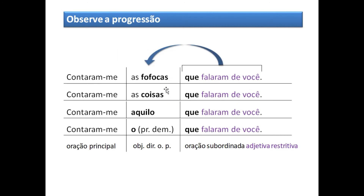Outros exemplos: 'Contaram-me as fofocas que falaram de você.' 'Contaram-me as coisas que falaram de você.' 'Contaram-me aquilo que falaram de você.' 'Contaram-me o que falaram de você.' Todas estão funcionando como objeto direto do verbo 'contar'. O núcleo do objeto direto é um substantivo, representado também por pronome. Esse 'que' está fazendo referência a ele. Então, não posso classificar como substantiva; aqui o 'que' é pronome relativo, retomando algo já falado. Ela vai ser uma adjetiva restritiva, porque não tem vírgula.